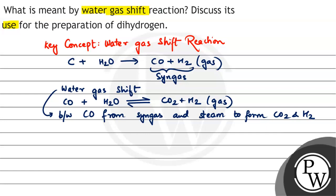Now, this is what is its use. The use is that this water gas shift reaction increases the yield of dihydrogen, the H2 gas.